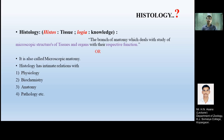Anatomy means the structural composition of your body — how your body is composed of various organs and their structures. Histology is also called microscopic anatomy. Histology has intimate relations with anatomy, physiology, biochemistry, and pathology, among others.